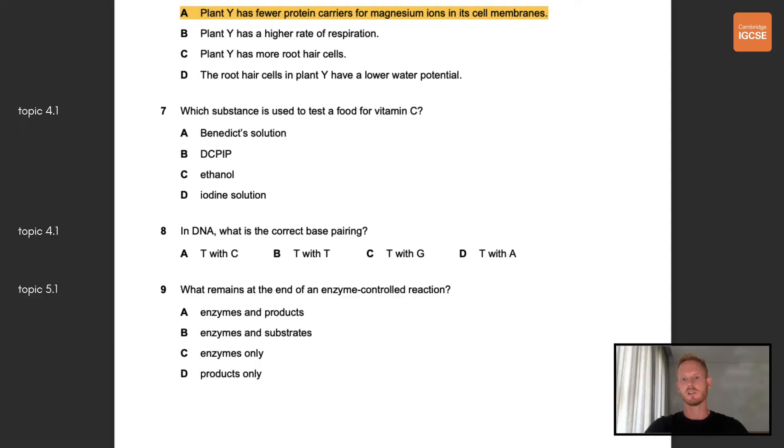Question seven, which substance is used to test a food for vitamin C? Benedict's solution is used to test for reducing sugars, DCPIP for vitamin C, ethanol for lipids and iodine solution for starch. So the correct answer is B, DCPIP. Question eight, in DNA what is the correct base pairing? DNA is made of two strands held together by bonds between pairs of bases. The bases always pair up in the same way, A pairs with T and C pairs with G. So the correct answer is D.